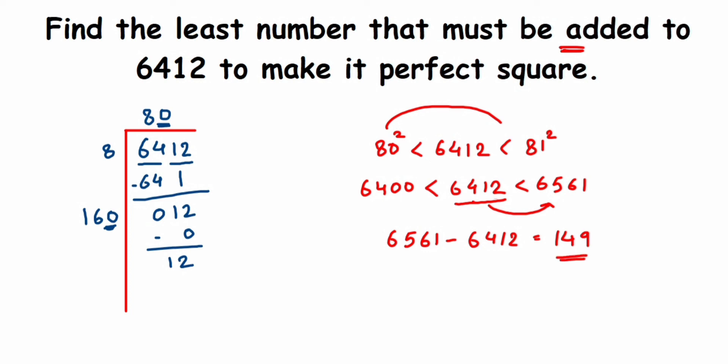The least number is 149. If I add 149 I'll get a perfect square. Therefore, the least number to be added is 149. In case you're asking to find the square root also, it's very simple. Just add 6412 plus 149 and you will get 6561.